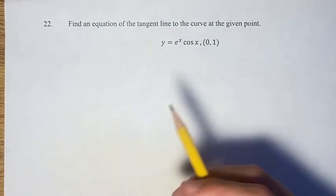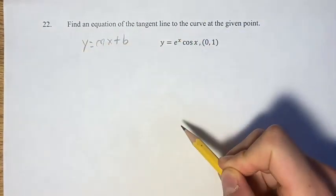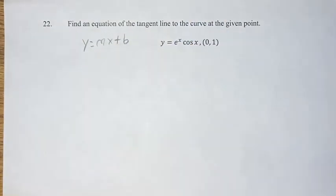To get the tangent line, it's going to be in the form y equals mx plus b, slope-intercept form, where m is your slope and b is your y-intercept.